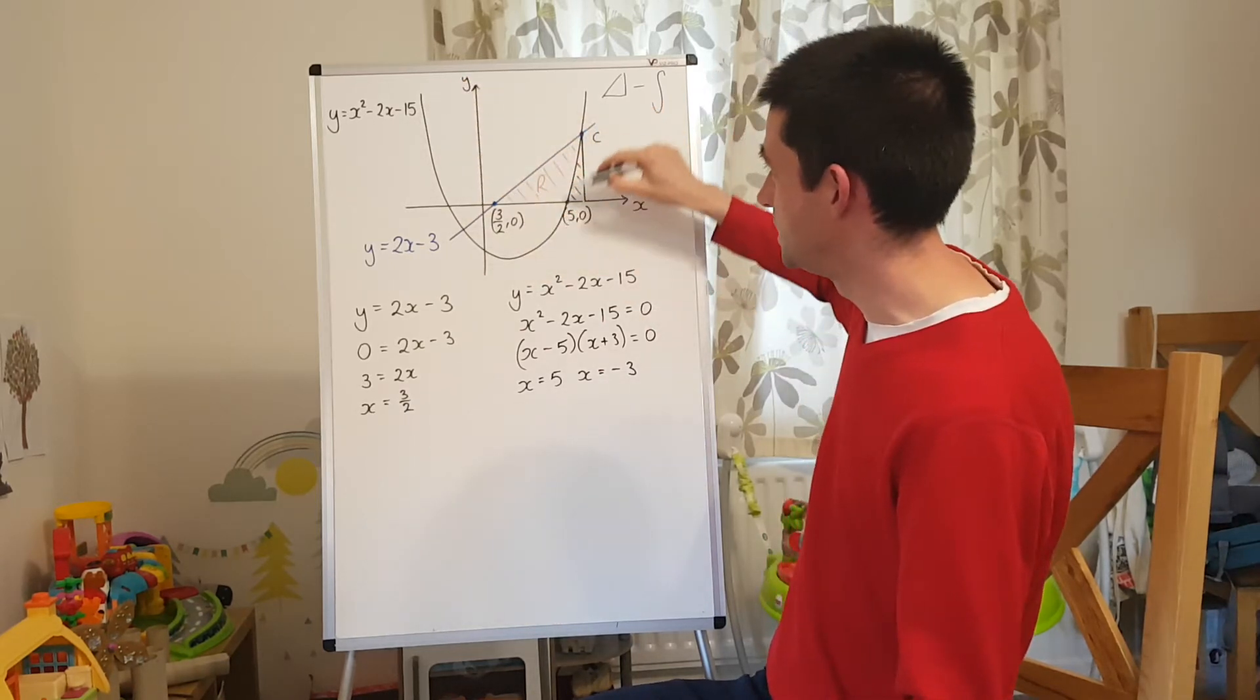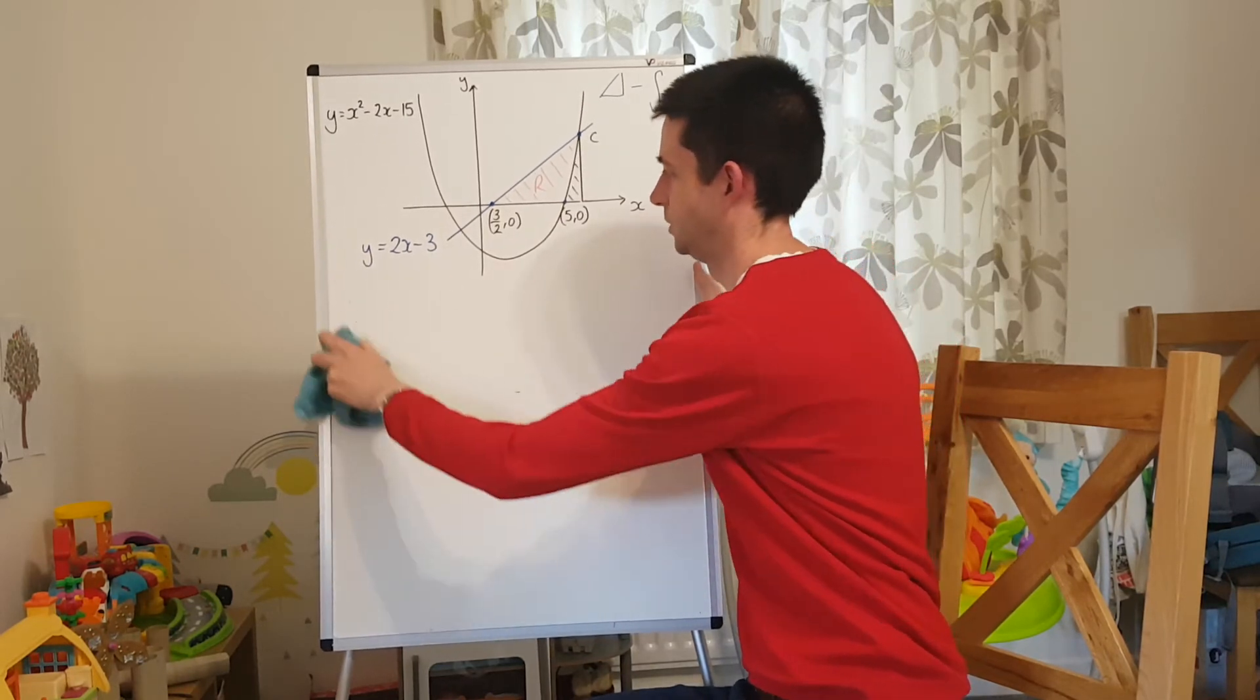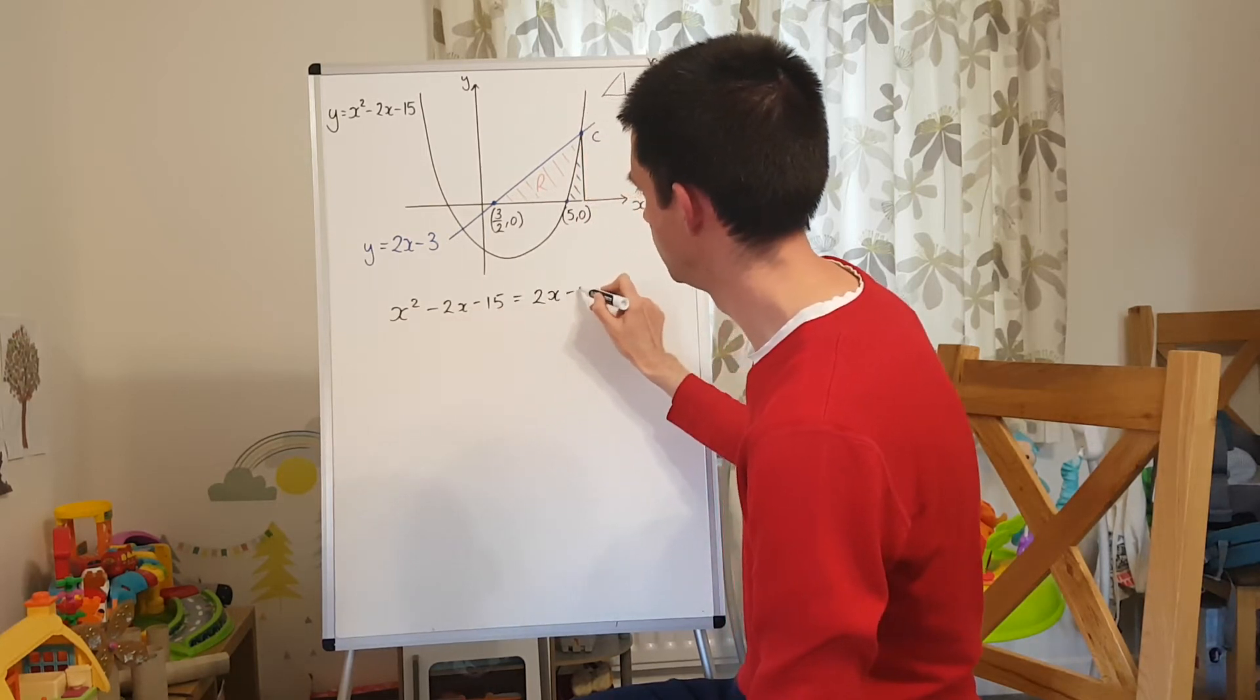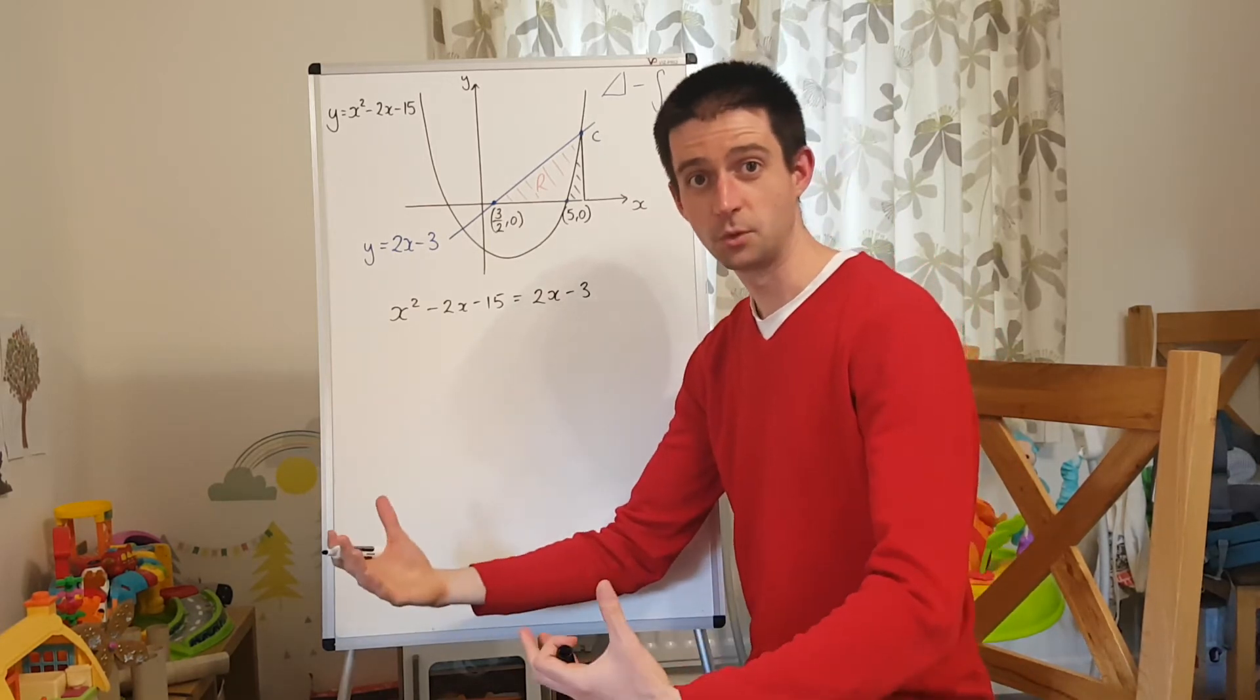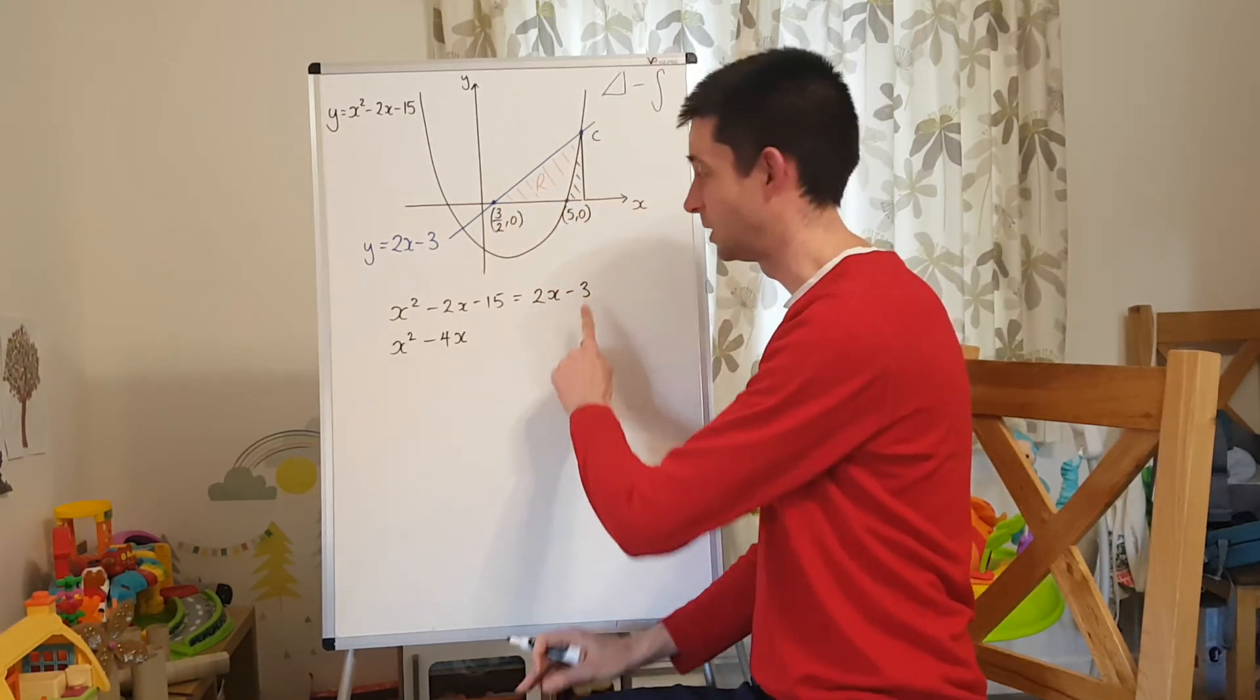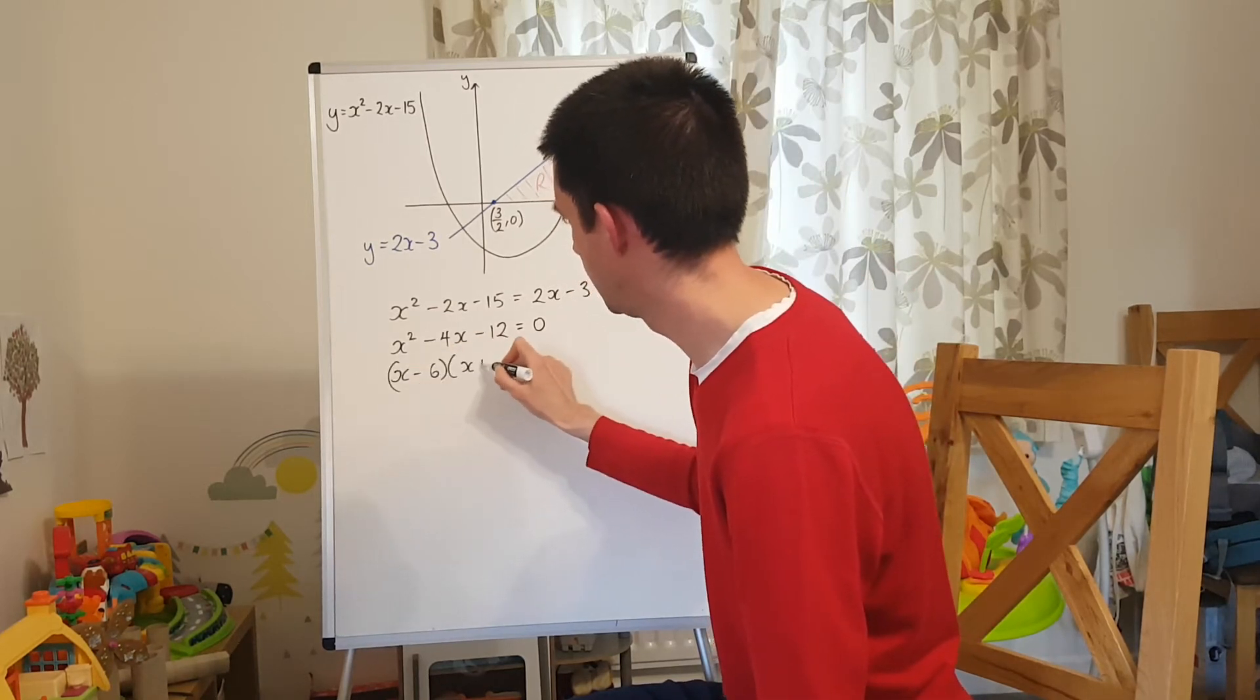The last one I need to find is this point here that I've labelled C. And you can see that that is the point of intersection between the quadratic curve and the straight line. So how do you find a point of intersection between two lines? You solve simultaneously. So what I'm going to do now is I'm going to set the quadratic x squared minus 2x minus 15 equal to the straight line 2x minus 3. That's a quadratic equation. What do they have to equal before we can solve them? They have to equal 0. So I'm going to subtract the 2x from both sides of the equation, give me x squared minus 4x. I'm going to add 3 to both sides of the equation, giving me negative 12 on the left-hand side equals 0. So factorise and solve x minus 6, x plus 2.